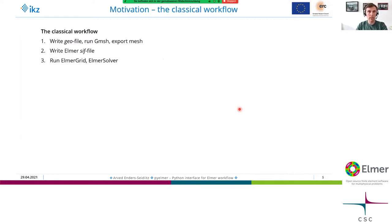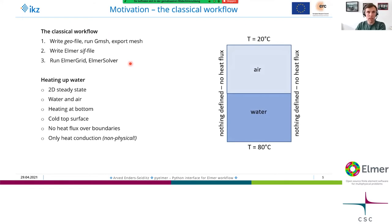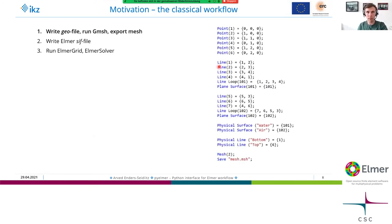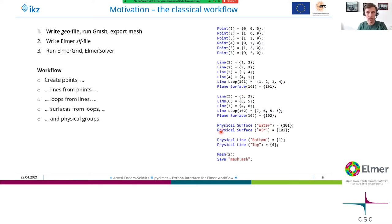Let's start with the motivation. I tried to sketch what I call the classical workflow with Elmer: first you write the geo file for Gmesh, then create your simulation input file and run ElmerGrid and ElmerSolver. I'll explain this using a heating-up-water case, where we have two boxes — one with water and air on top — with heating at the bottom and cold surface at the top. It's just heat conduction, not physically perfect, but good for illustration.